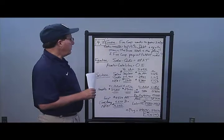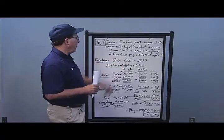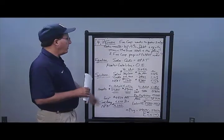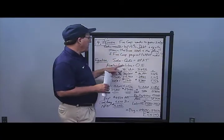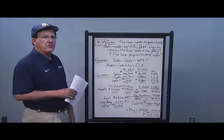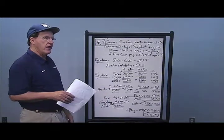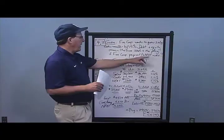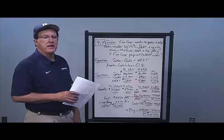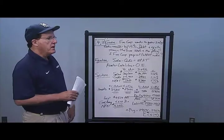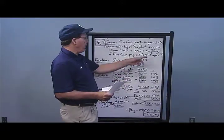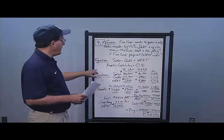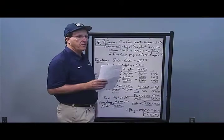In problem number two, Fire Corp wants to grow sales, costs, and assets by 15%, just like problem one. But in this case, debt and equity remain the same — they want no new debt, no new equity. What is the plug if they want to pay out one half of their net income in dividends? Same equations apply: sales minus cost equals net income, and assets equal liabilities plus owner's equity.